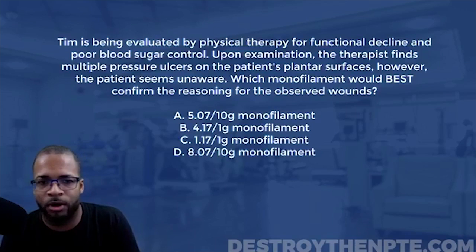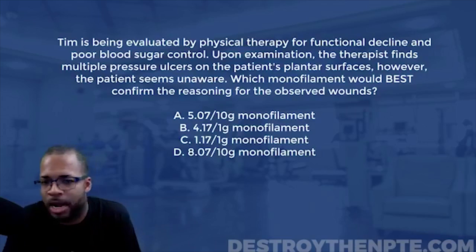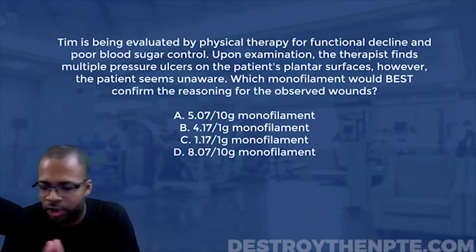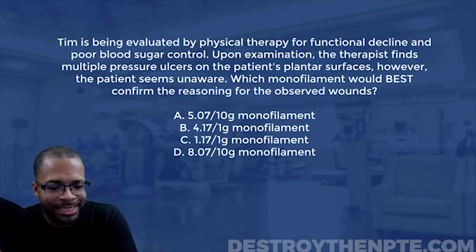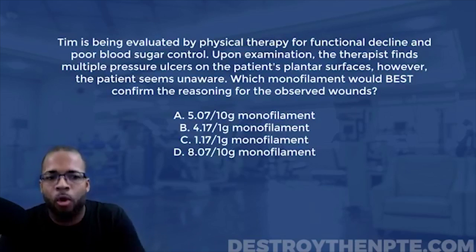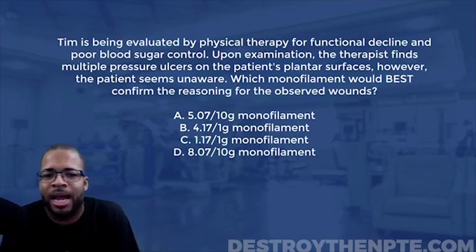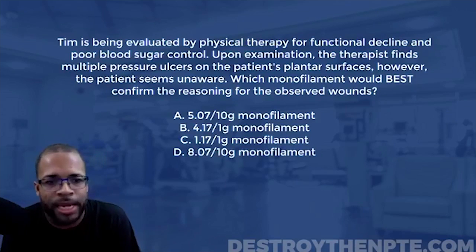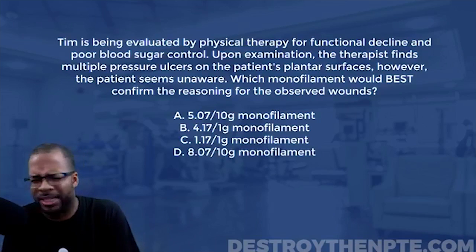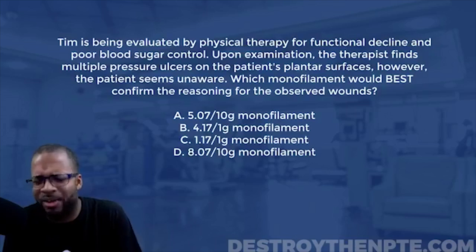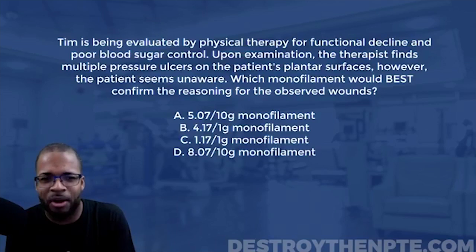We have this patient coming in with functional decline and poor blood sugar control. When you see poor blood sugar control in a patient, you should be thinking about diabetes, because that's the number one condition prevalent in PT. When you get out in the field, the majority of your patients have some level of diabetes.